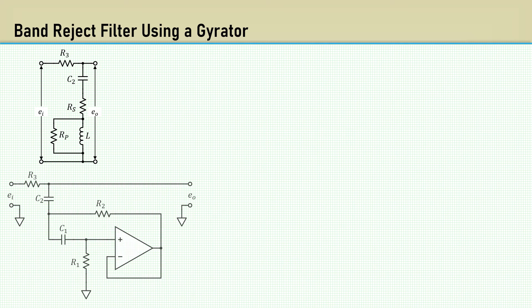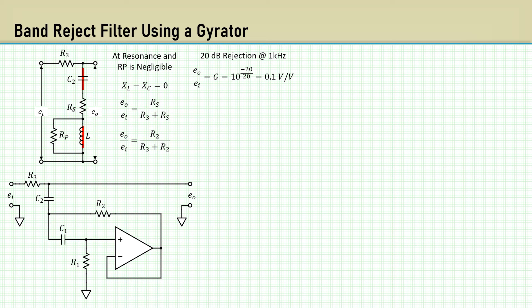Let's put the gyrator to use as a band reject filter. Here's the passive version and the active equivalent. At resonance, the inductive reactance minus the capacitive reactance is zero. So L and C2 together in series is a short. The attenuation is a voltage divider between R3 and Rs. Since Rs equals R2 in the active model, we can replace Rs with R2. Let's say we want 20 dB rejection at 1 kilohertz. That's a voltage gain of 1 tenth of a volt per volt. Now rearranging the gain equation to solve for R2. Let R3 be 3 kilo ohms. Plugging that in gives us 333 ohms.